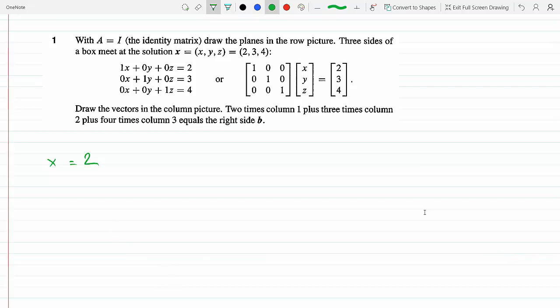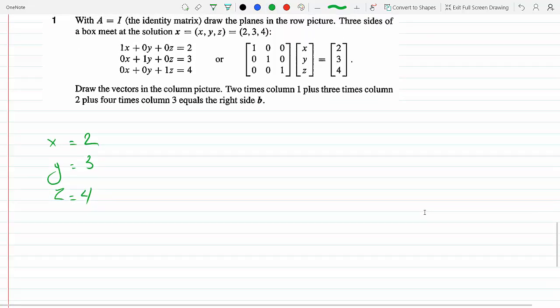The second equation gives us y equals 3. It's already there: 2, 3, 4, so y equals 3. The last one is z equals 4. Now we graph this in 3D.